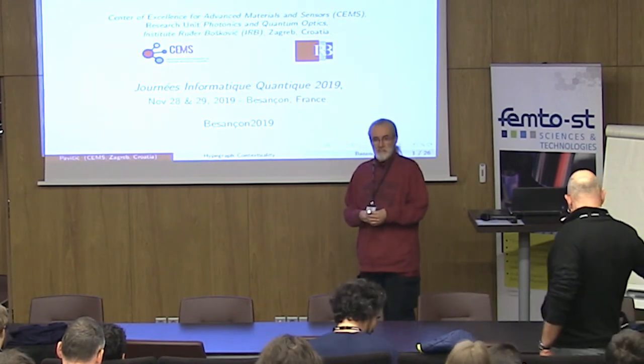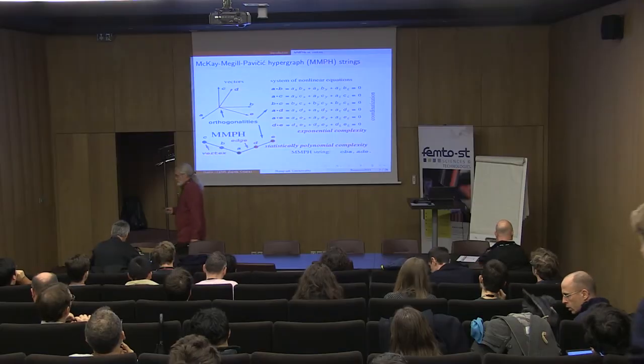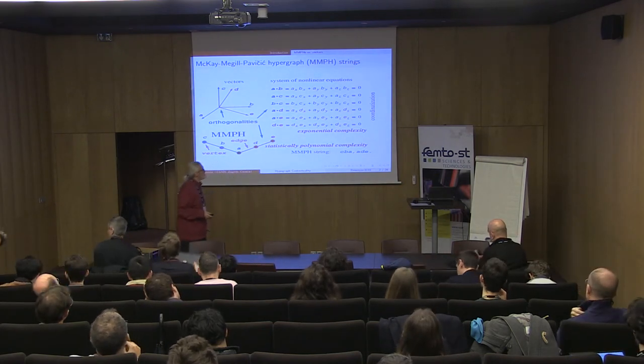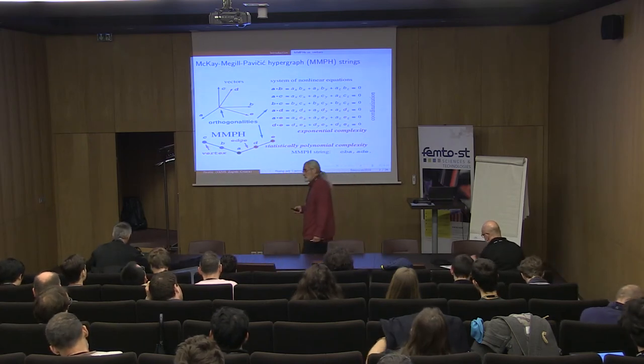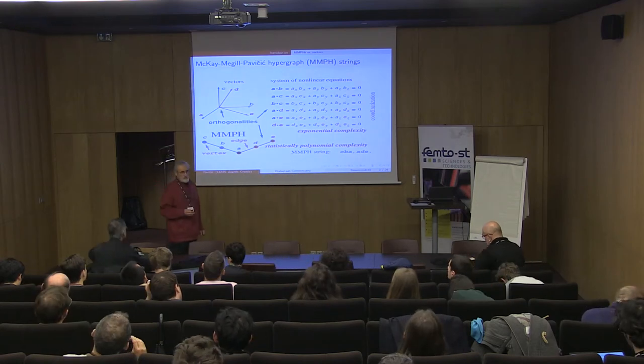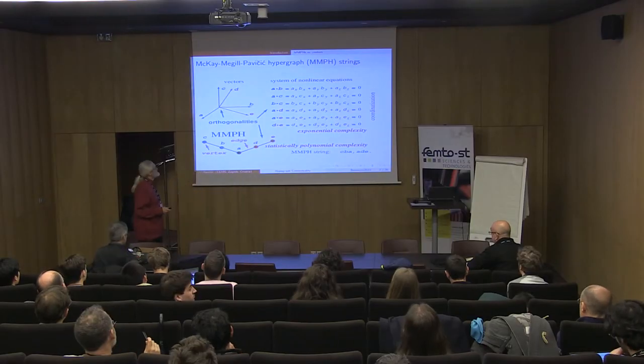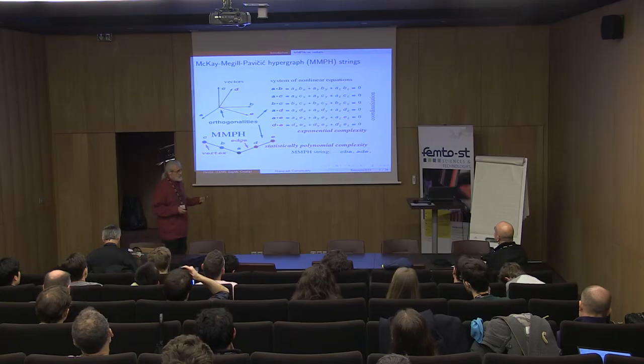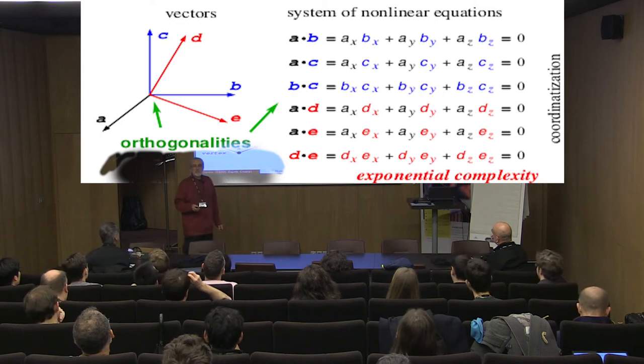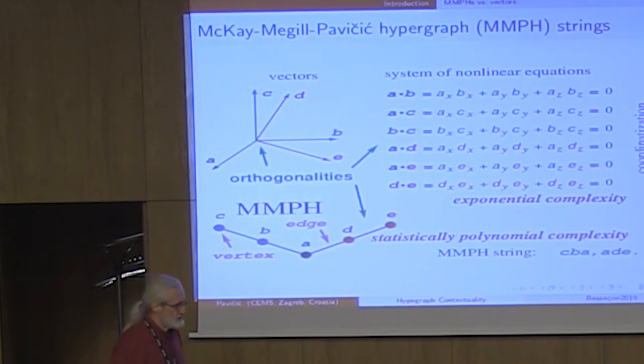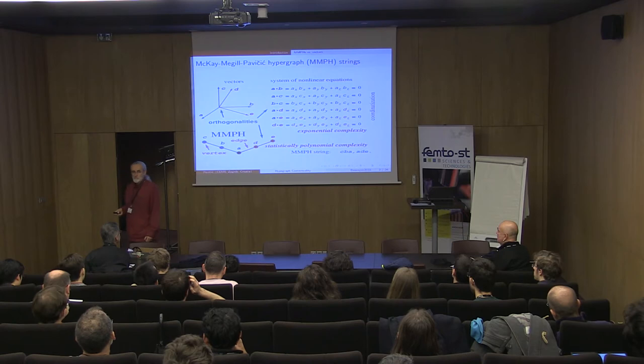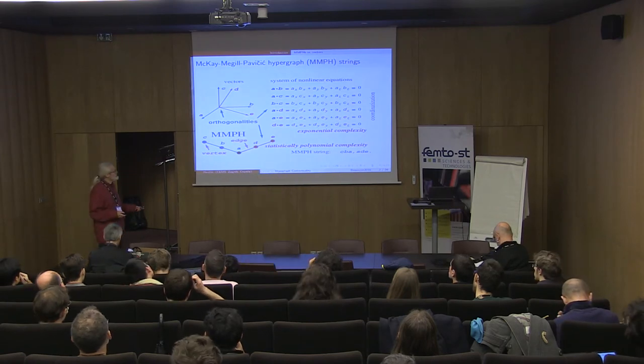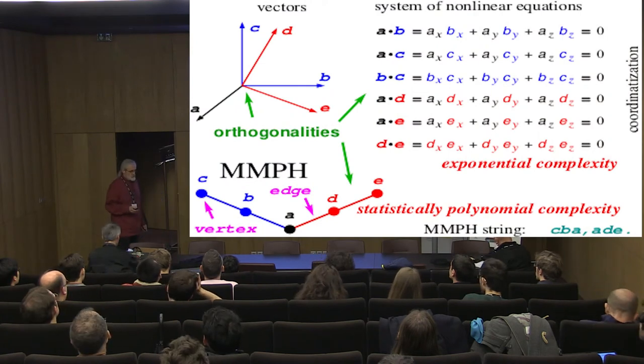Thank you for inviting me. I'll start with some formal points and will dwell on applications and implementations later on. An important feature of quantum systems, particularly for constructing contextual sets, is the orthogonality, mutual orthogonality of vectors or vertices. You cannot attack such a problem head on because the brute force is not feasible, even with the strongest supercomputers, due to nonlinear equations of exponential complexity. Some 20 years ago, I established a correspondence between vectors and vertices of hypergraphs, and between orthogonalities and edges on which such vertices sit. It turns out to be of statistically polynomial complexity, therefore feasible.